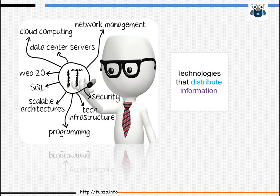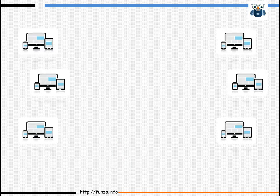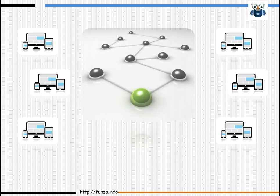Information technology, or IT, is associated with technologies that distribute information. In a company, the three most common devices used by staff to consume or distribute information are computers, phones, and tablets. Having these devices is fine, but communication is only possible if these devices are linked to one another. Networks are what link these devices.